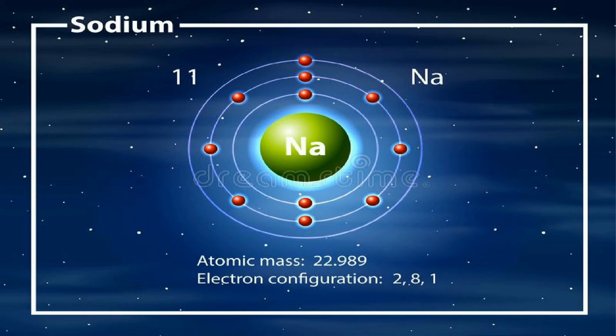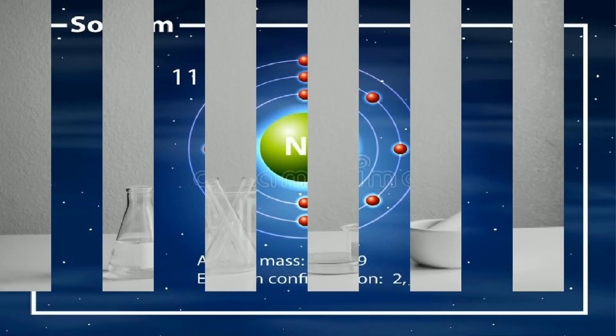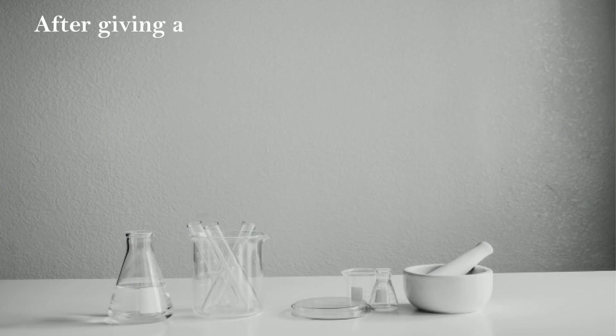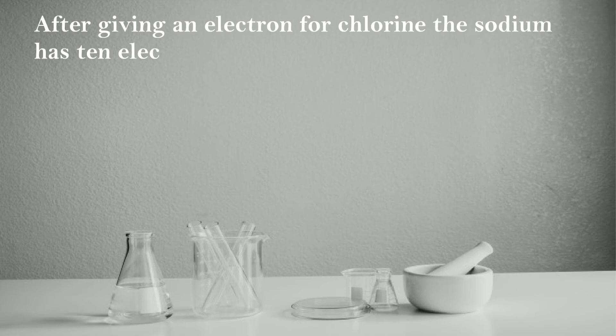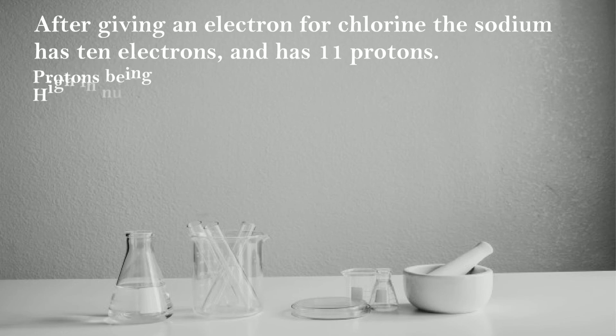After giving an electron for chlorine, the sodium has 10 electrons and has 11 protons. Protons being high in number, it gets positive charge.